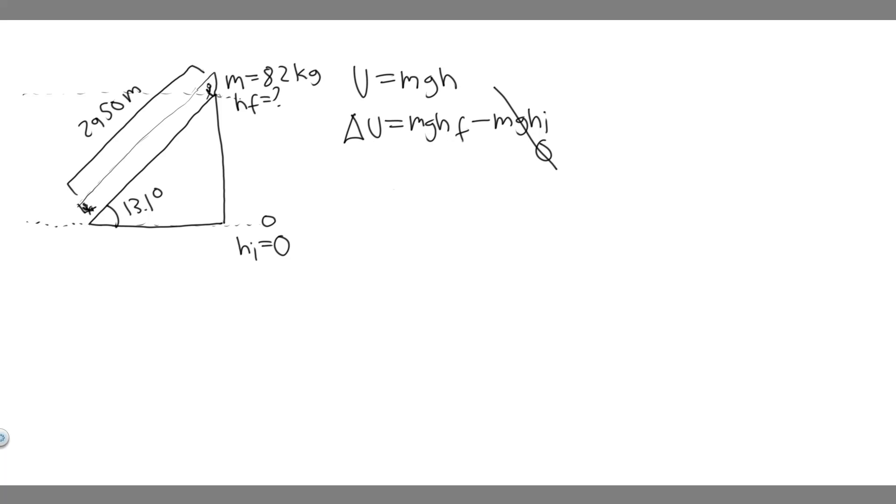So really the change is just going to be equal to the mass, which is 82 kilograms, times g, which is 9.8 or 9.81, times h final. So now what we need to do is find the final height. We're trying to find this distance right here, and the way we're going to do that is by using trig. So notice what we have here.